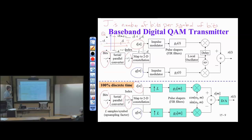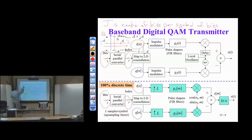Not all QAM constellations separate this nicely, but the ones we deal with — 4QAM, 16QAM, and most 8QAM — will have this type of structure. Here's our constellation map. I have two bits to encode: for example, upper-right could be 0,0; upper-left 0,1; lower-right 1,0; lower-left 1,1. Any encoding will do as long as the receiver knows the constellation map.